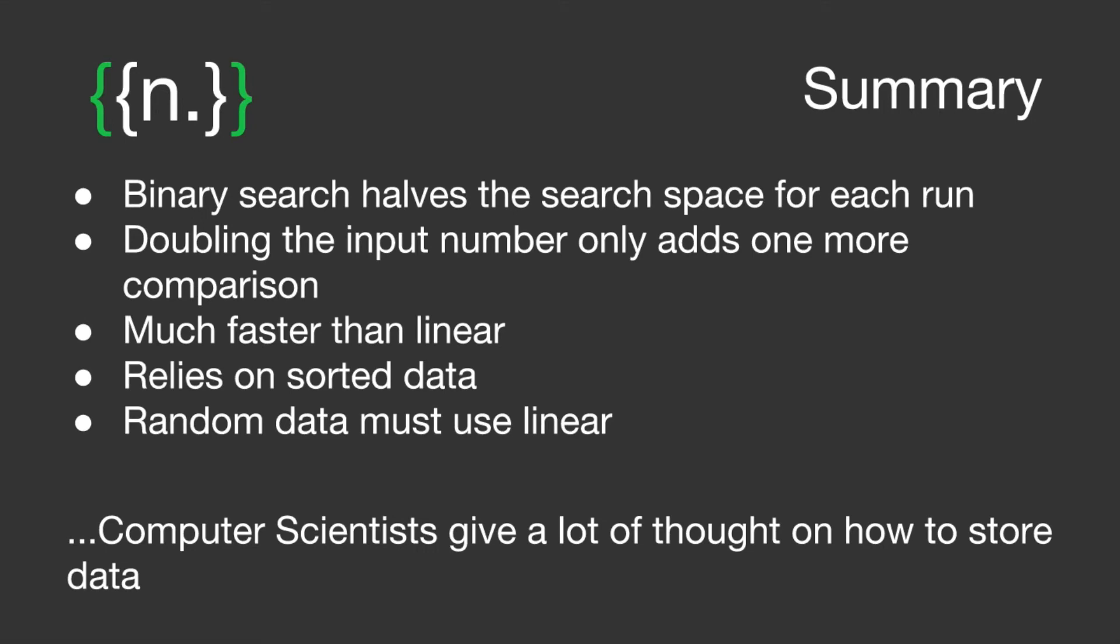In summary, binary search halves the number of items in each run. If you double the input number of items, it only adds one more comparison. The search is much faster than linear, however it relies on the data being sorted.